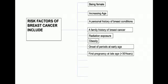First pregnancy at a late age — that is, greater than 30 years — is also a risk factor. It is found that women who give birth to their first child after the age of 30 may have an increased risk of breast cancer.